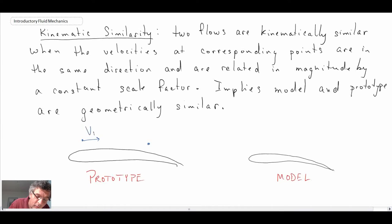Here we would have v1 for our prototype and then here you might have v2 for the prototype. Going to corresponding points in the model flow field, what we would have in order for this to work would be beta v1 model and then beta v2 model.